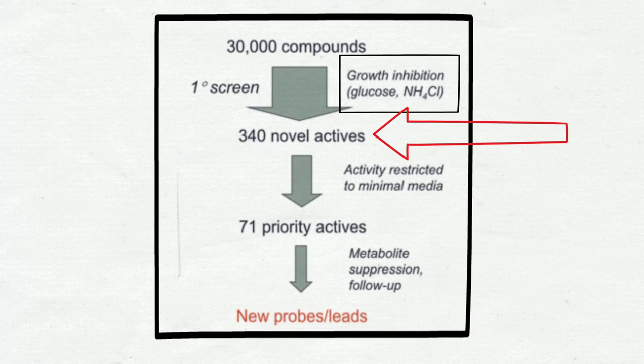In the end, she was able to find 340 actives. This means, of the 30,000 compounds, 340 of them were able to inhibit the growth of E. coli in the petri dish.